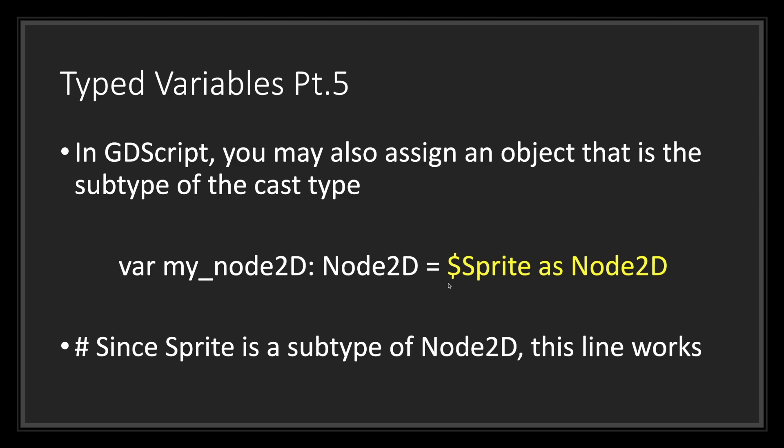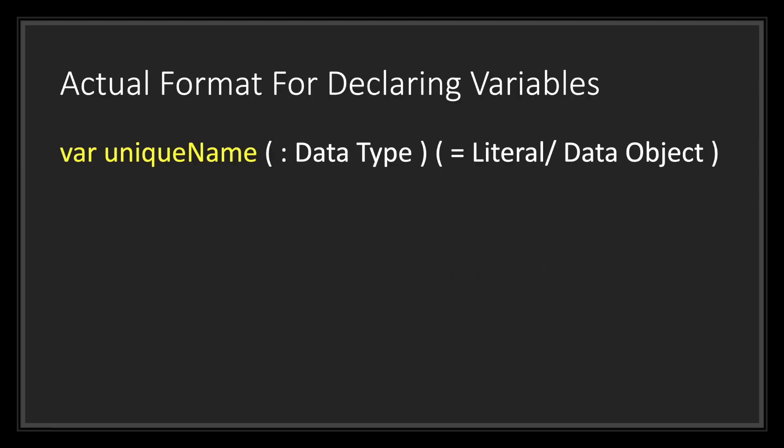So as you can see here, we have the sprite followed by the word as followed by the data object we want to convert it to. In this case, node 2d again, since sprite is a subtype of node 2d, this line will work. Now that we've gone through everything, this is the actual format allowed when declaring a variable.